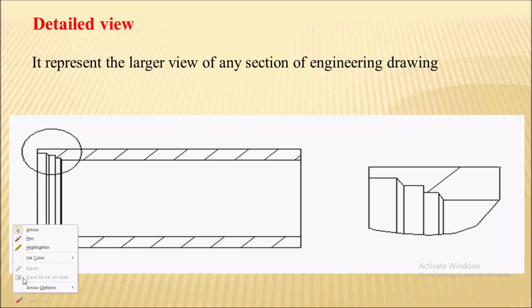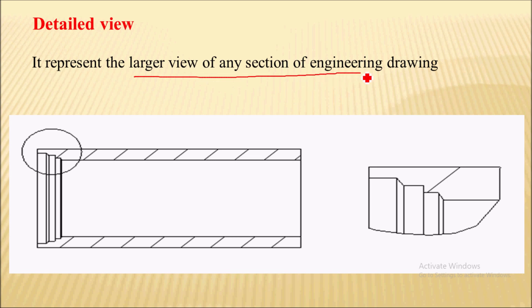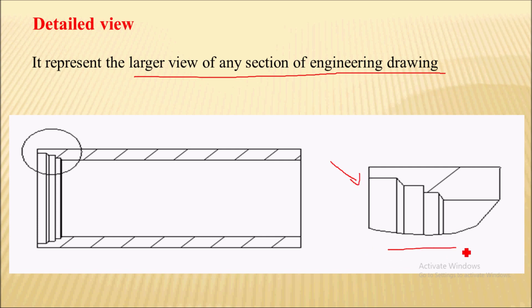The next type of view is the detailed view. A detailed view represents a larger view of any section of an engineering drawing. Here you can see a drawing — this portion is very compact and it is difficult to show the dimensions here. So I will take a detailed view of this portion and show it separately, which is the detailed view of this parent view.